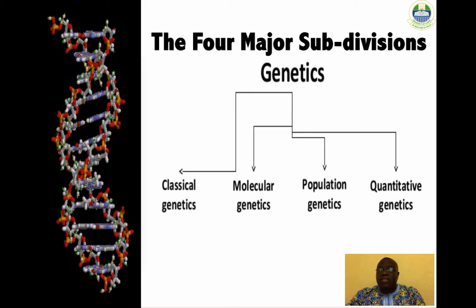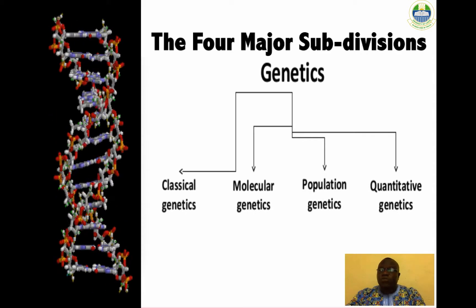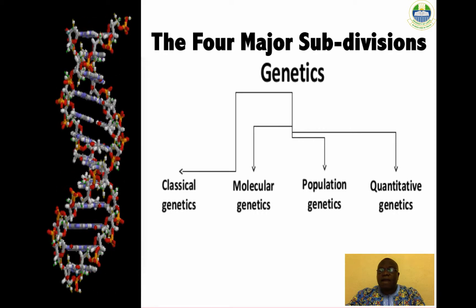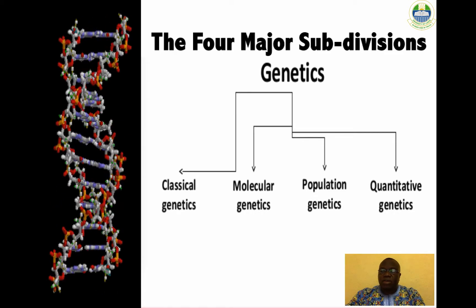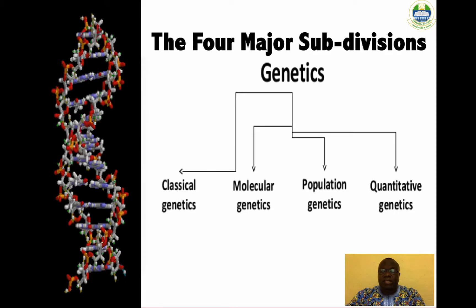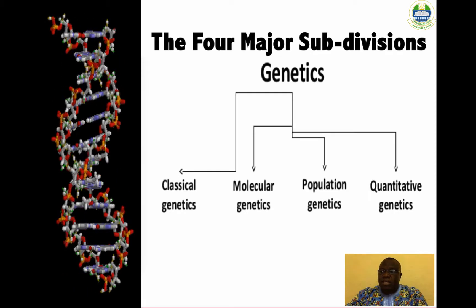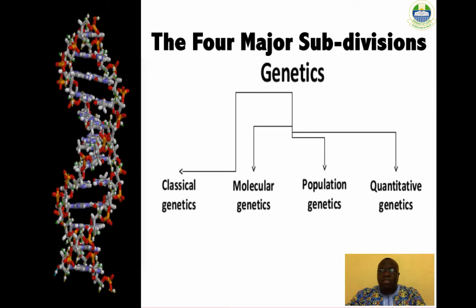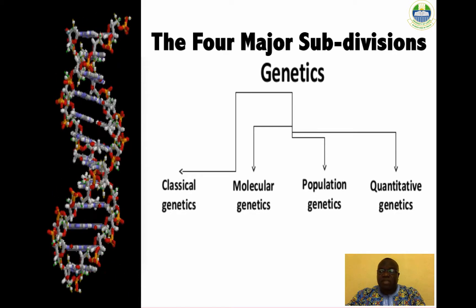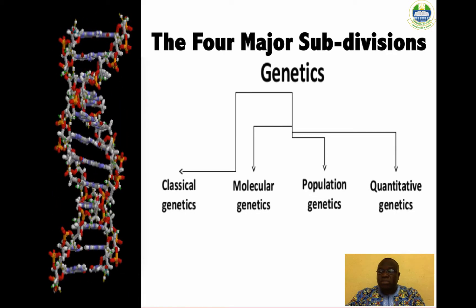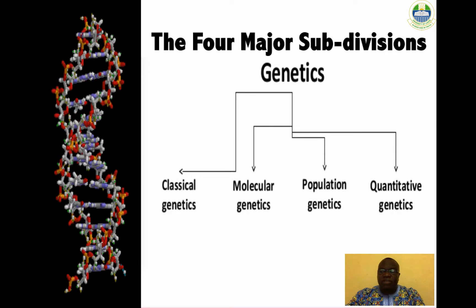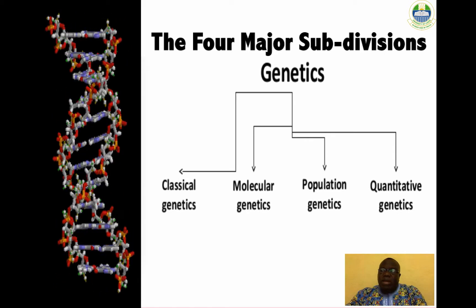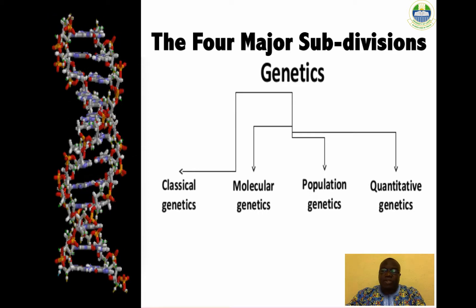Genetics can traditionally be subdivided into four divisions. The four major branches of genetics are classical genetics, molecular genetics, population genetics, and quantitative genetics. All genetics before the 1970s is classical genetics, which is mainly based on observing phenotype inheritance and describes how traits are passed from generation to generation.